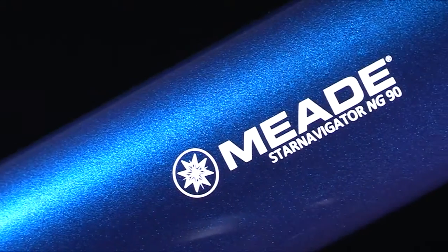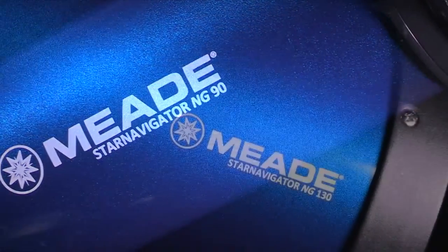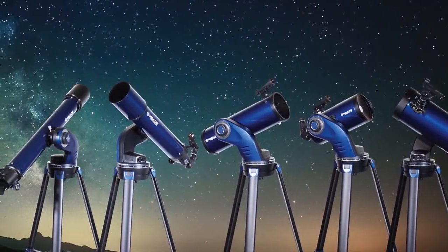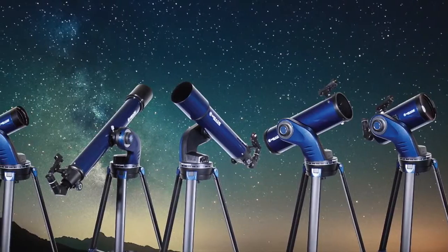The Star Navigator NG telescopes include apertures from 90 mm to 130 mm, including refractors, reflectors, and Maksutov-Cassegrain optical designs.